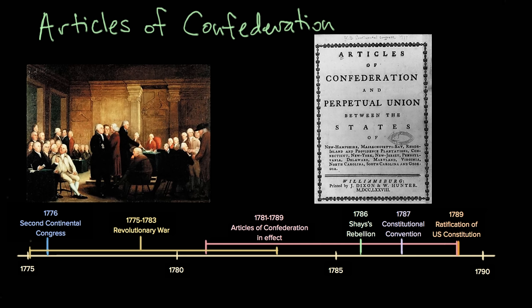So we're talking about the Articles of Confederation, which many people don't realize was the first Constitution of the United States before the one that we have now since 1789. One of the biggest debates that we have in our history is about the balance of power between the federal government and state governments.